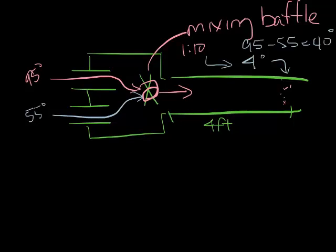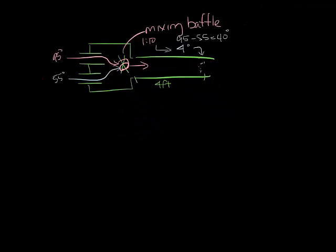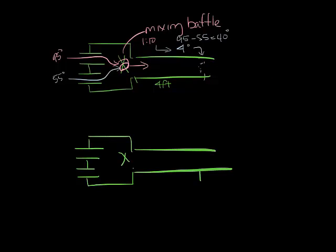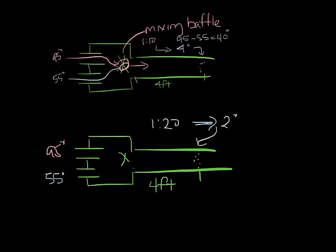Now let's look at 1 in 20. Again, let's draw a box real quick. Now we have the same 95 degrees and 55 degrees going into the box, but 1 in 20 means that 40 degree differential only gives you 2 degrees of variance 4 feet down from the box. 1 in 20 is considered a high mixing box.